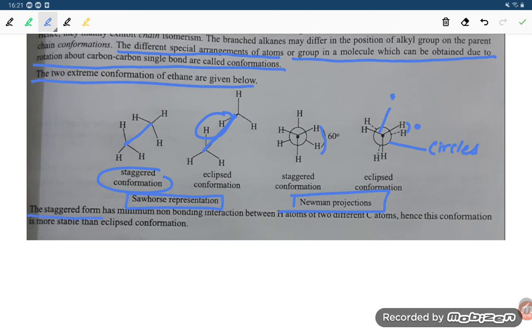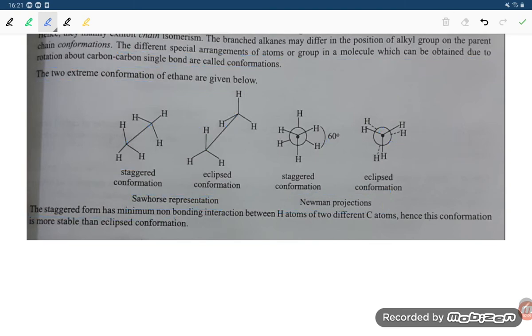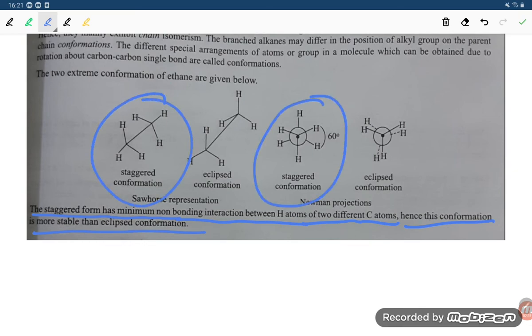The staggered form has a minimum non-bonding interaction between hydrogen atoms of two different carbon atoms. Hence this conformation is more stable than the eclipsed conformation. So staggered conformation is more stable whether it is sawhorse representation or Newman representation.